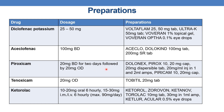The next drug is piroxicam. The dose is 20 mg twice a day for 2 days followed by 20 mg once a day. Marketed preparations are Dolonex and Pyrox available in 10–20 mg capsules and 20 mg dispersible tablet, and also 20 mg per ml injection in 1 and 2 ml ampoules. Piroxicam is also available in 10 and 20 mg capsules. The next drug is tenoxicam. The dose is 20 mg once daily. Marketed preparation is Tobitil in 20 mg tablet.